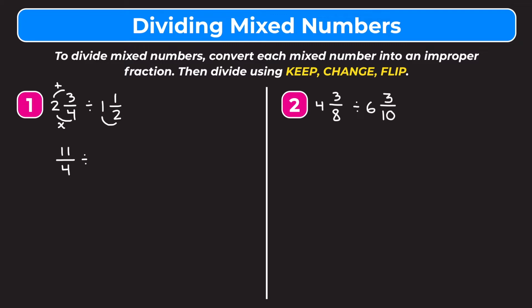Now we change one and a half into an improper fraction the same way: multiply the denominator by the whole number — two times one is two — add the numerator: two plus one is three, which becomes our new numerator, keeping the denominator. So now we have eleven-fourths divided by three-halves, and we're going to keep change flip.